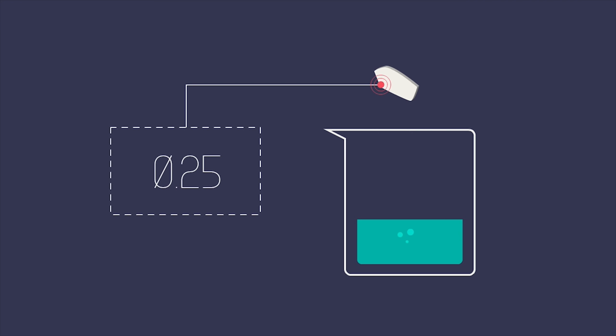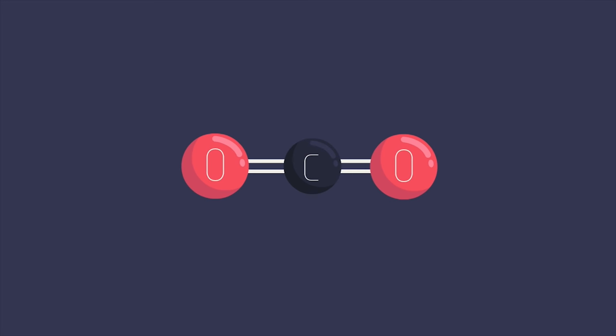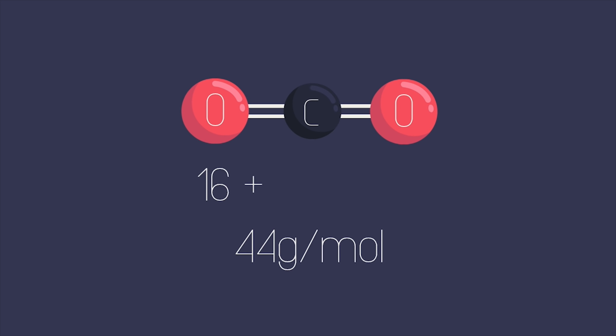There are 0.25 moles of calcium carbonate used, and so 0.25 moles of carbon dioxide escape from the reaction vessel. The molar mass of carbon dioxide is 44 grams per mole. That's 16 plus 16 plus 12.